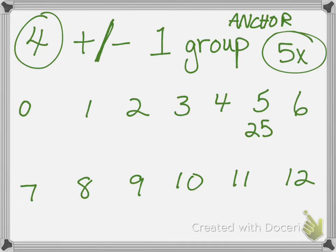If you know five times five equals 25, then you can easily figure out five times six. What do we do when we're figuring out the next times table? If we know five groups of five is 25, then six groups of five would just be adding another five, and that would make 30.